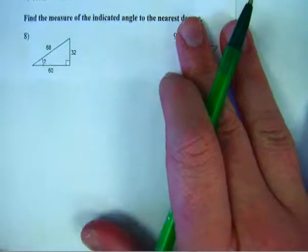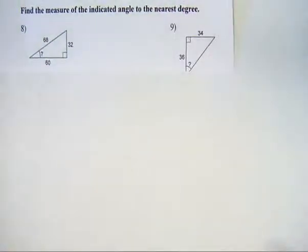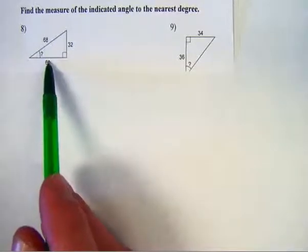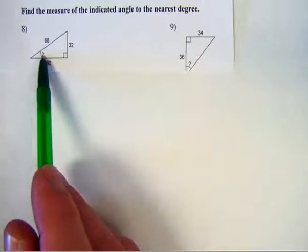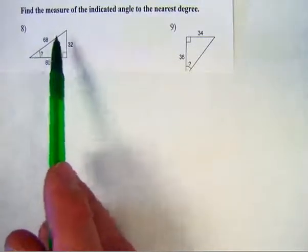All right, let's take a look now at number eight. Number eight asks us to find the measure of the indicated angle to the nearest degree. And so I'm going to look and see what information I have on this. And I have for this angle, the opposite side, the adjacent side, and the hypotenuse.